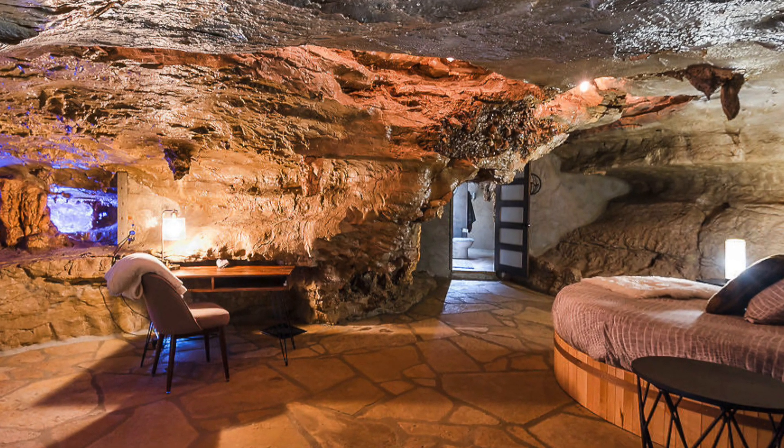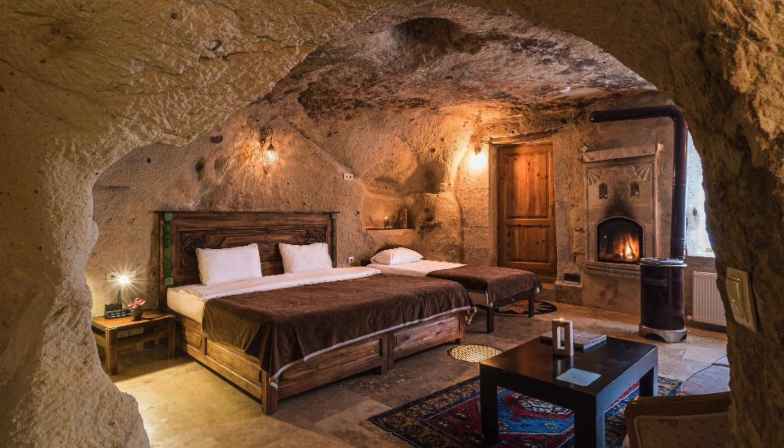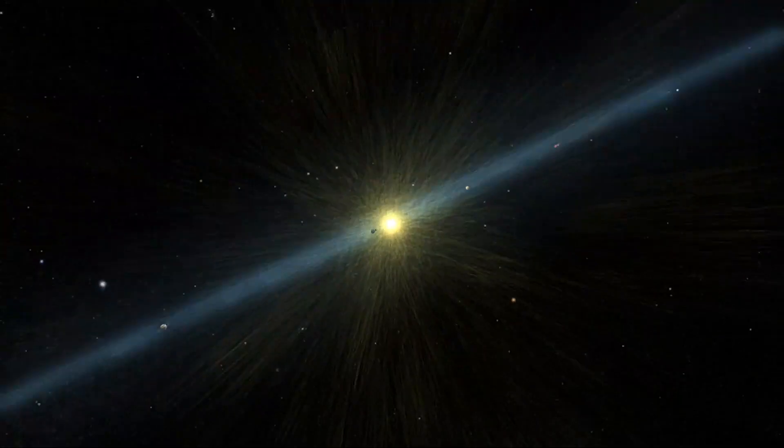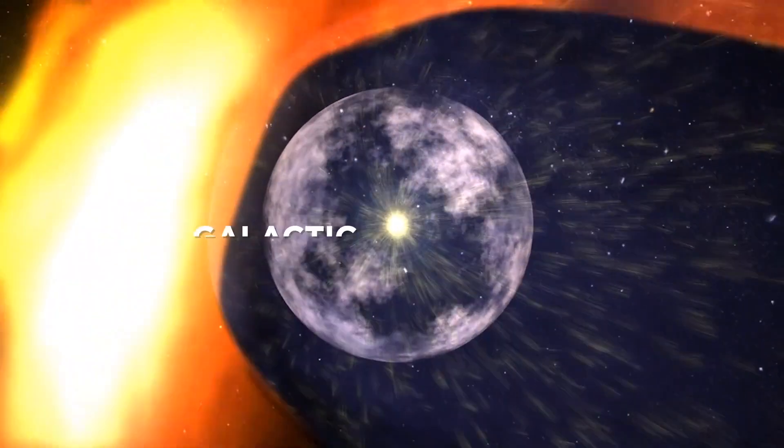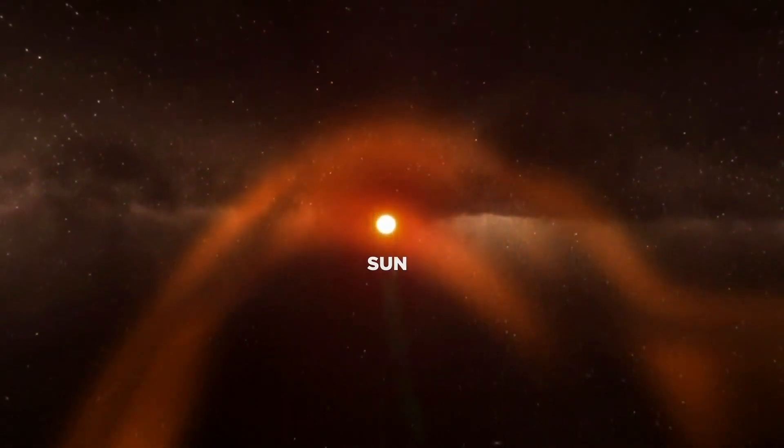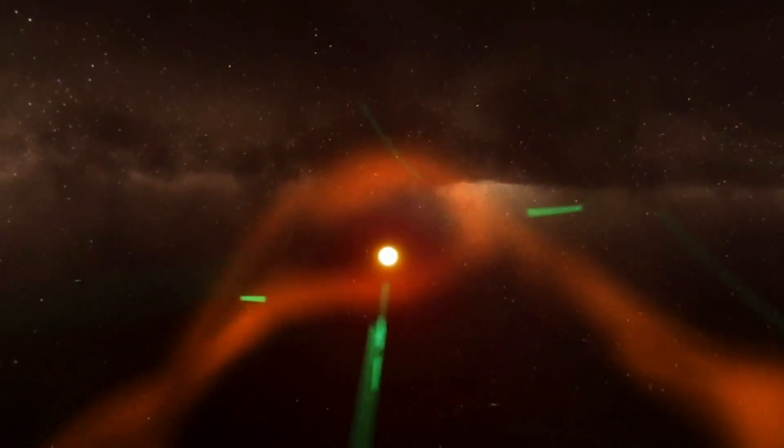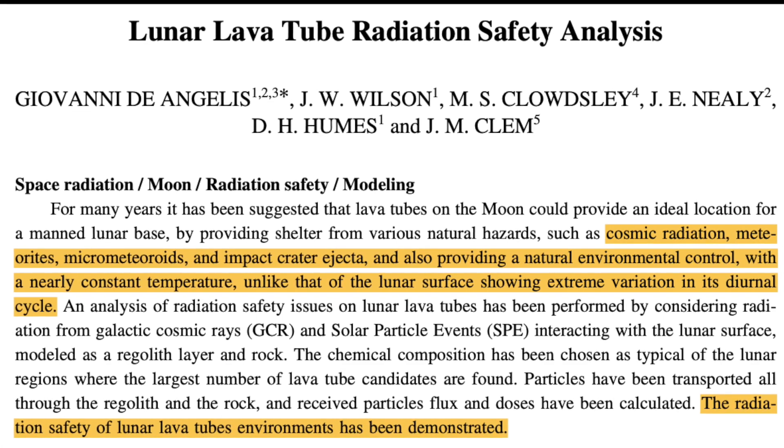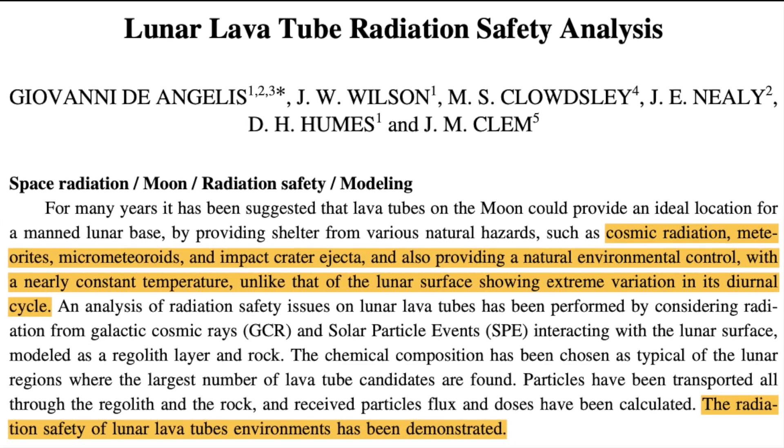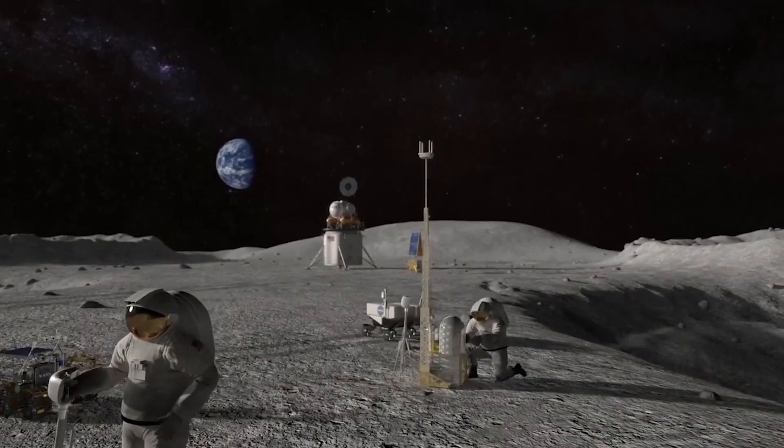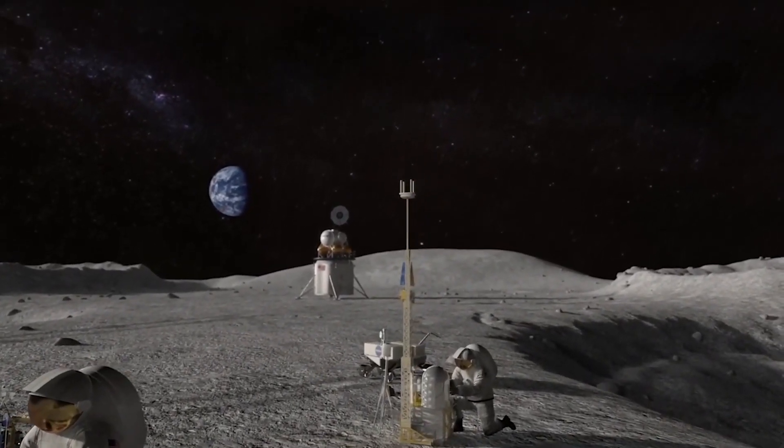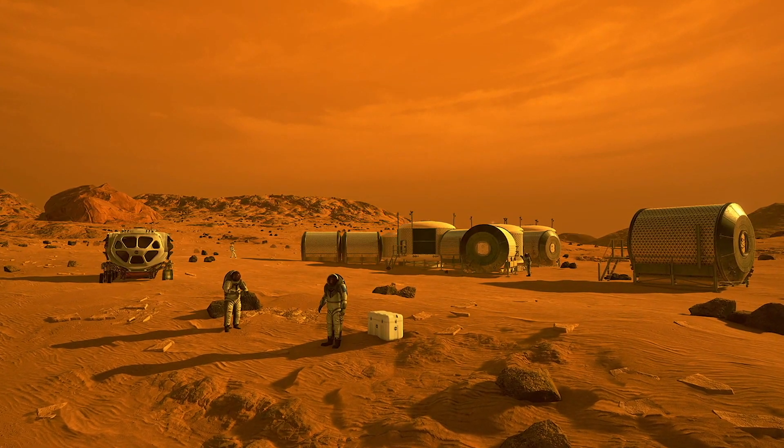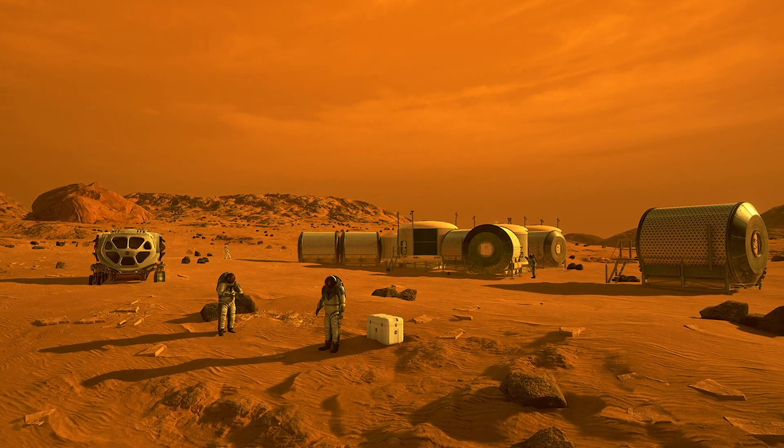So now we know that lava tubes can maintain temperatures that would rival the most comfortable homes here on Earth. But will lava tubes protect astronauts from galactic cosmic rays and solar radiation? A safety analysis on lunar lava tube radiation suggests that lava tubes at the depth of 6 meters provides protection from galactic cosmic rays. A shelter that provides this level of protection and comfort is well beyond anything that we can practically build artificially. This begs an interesting question.